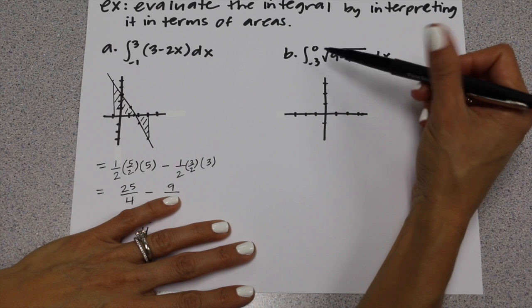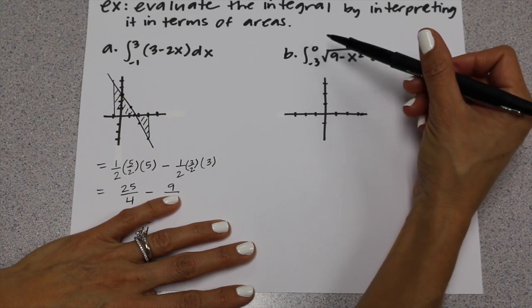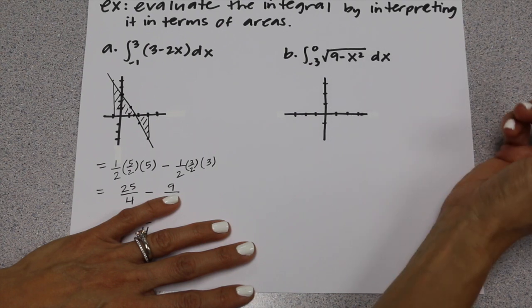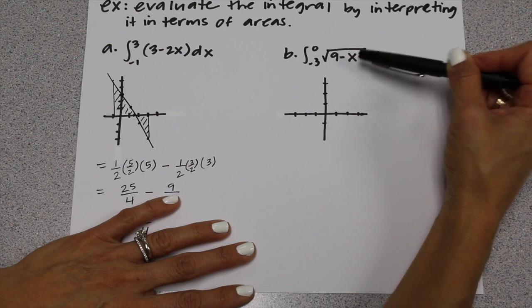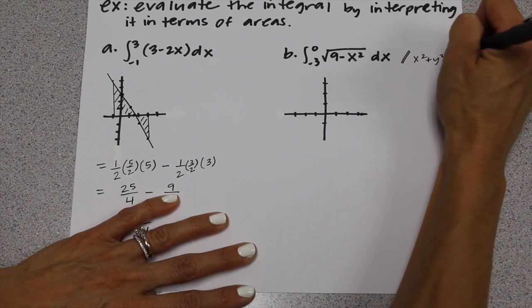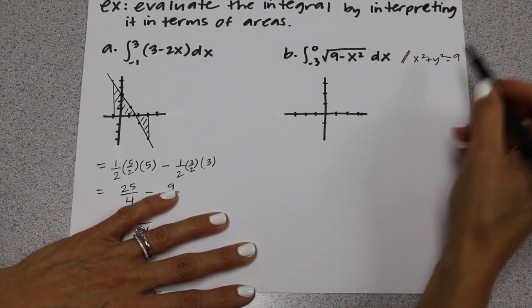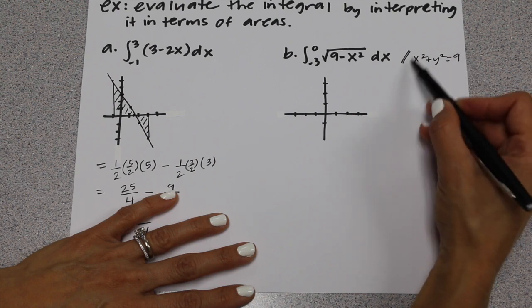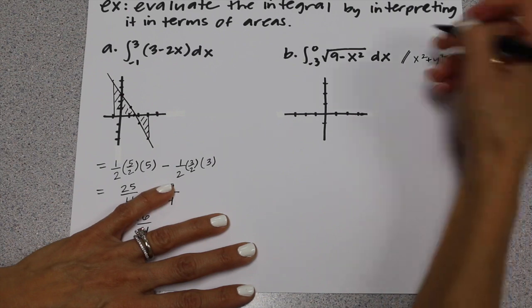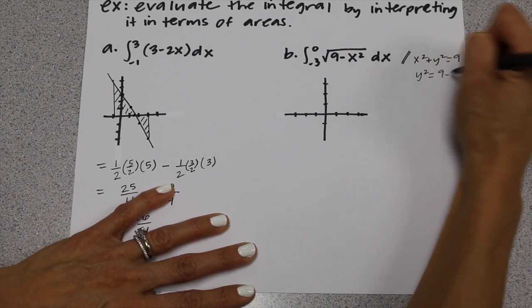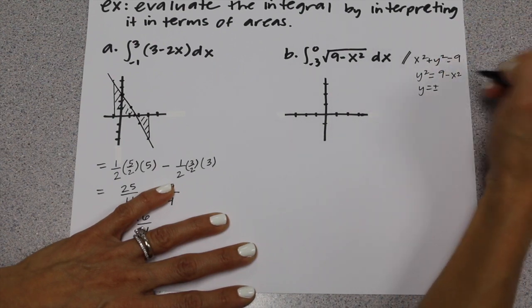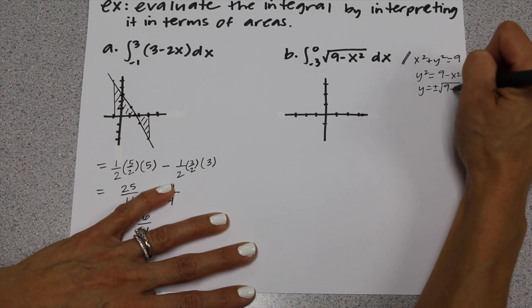This is a specific problem: the area under the curve from negative 3 to 0, where the function is the square root of (9 minus x²) dx. This is a specific function — consider x² plus y² equals 9. We can see this is the equation of a circle with center (0, 0) and radius 3. If we isolate y, we get y² equals 9 minus x², and then square-rooting both sides gives y equals plus or minus the square root of (9 minus x²).